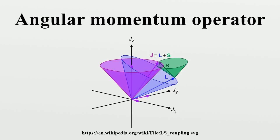Specifically, L is a vector operator, meaning Lx, Ly, Lz are three different operators. However, there is another type of angular momentum, called spin angular momentum, represented by the spin operator S.